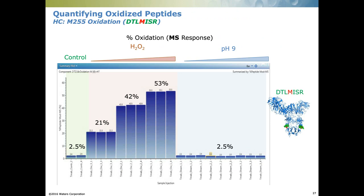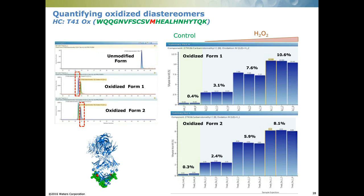Looking at peptides affected by forced oxidation: methionine 255 is in the CH2 domain and very susceptible to environmental change, so we see a significant increase in modification level with increasing hydrogen peroxide levels, while alkaline stress did not affect oxidation. For some methionine residues that have diastereomers — for example, methionine 431 — the two oxidized forms are correctly assigned by Unify and the modification levels are calculated.